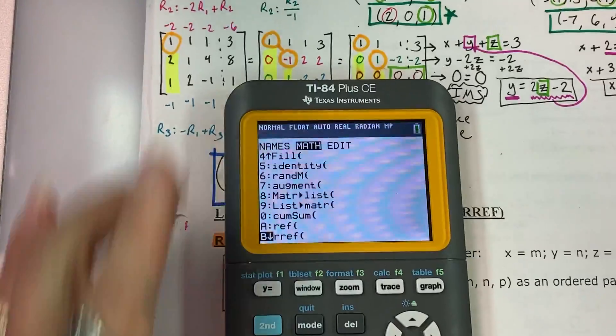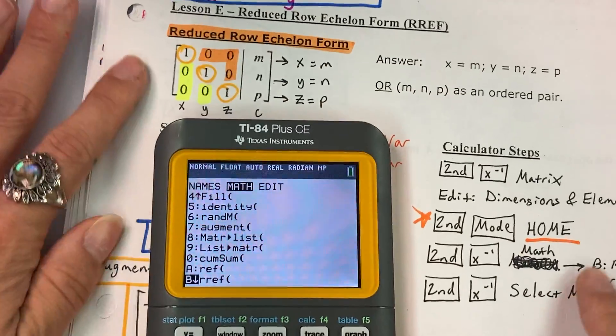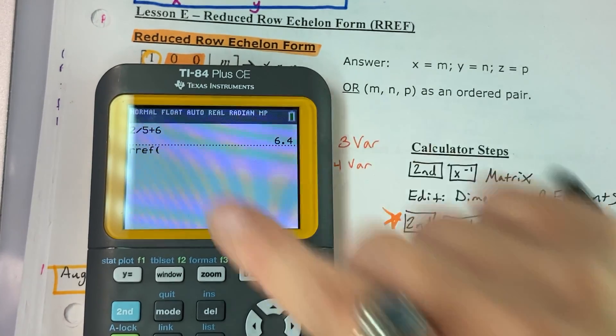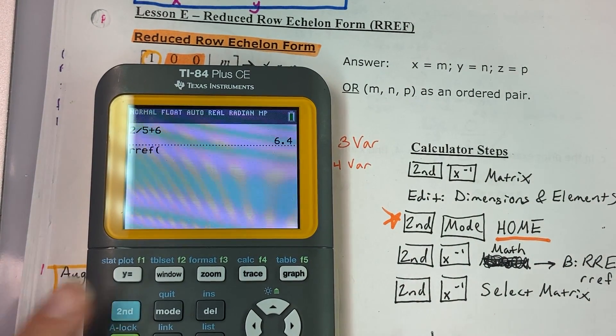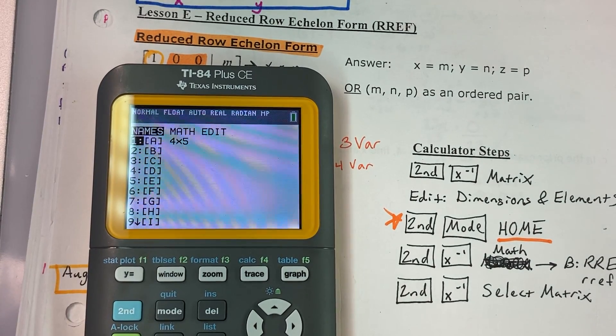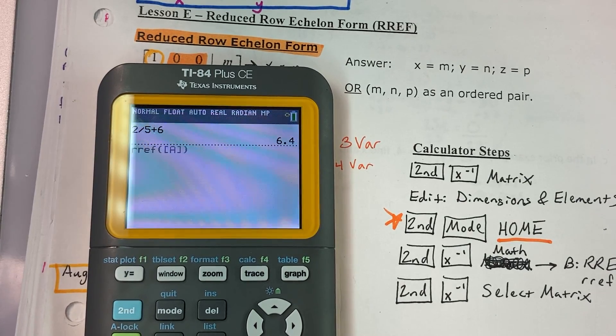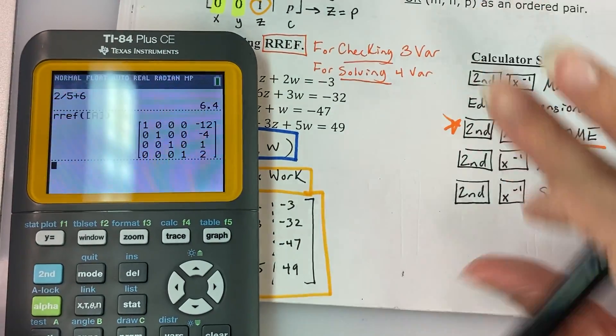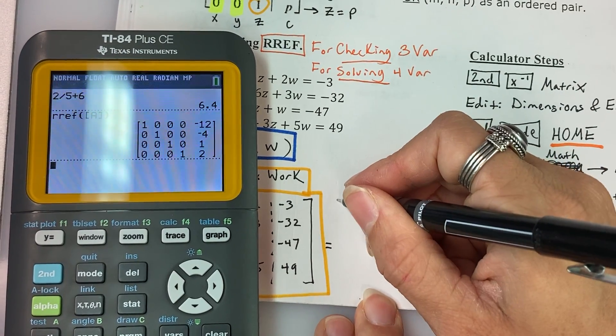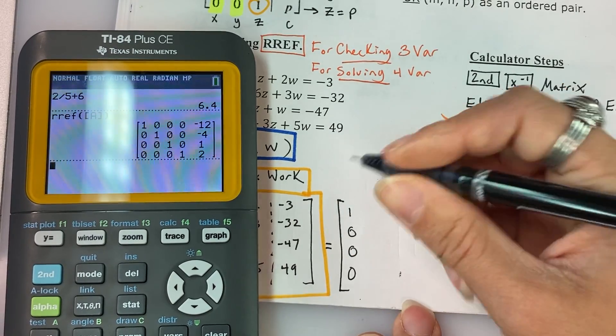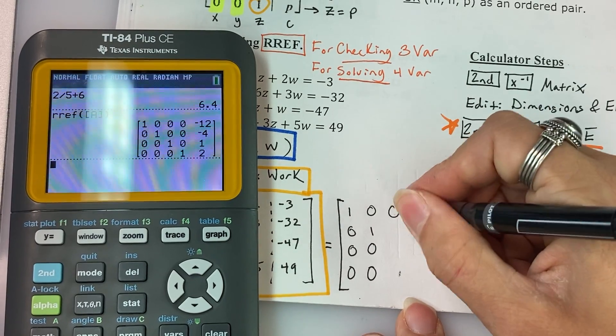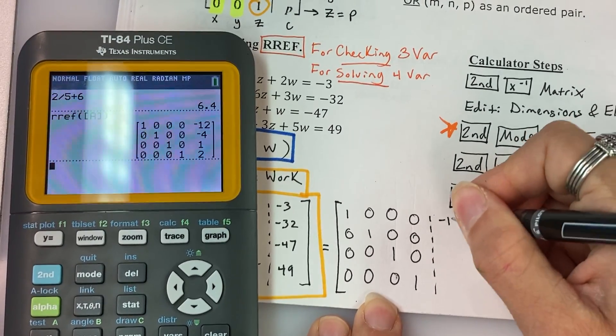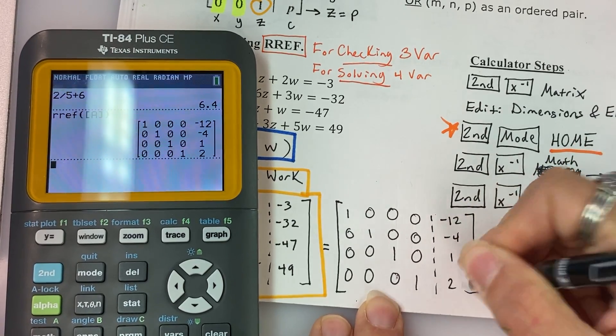All right folks. So after we select reduced row echelon form and press enter, we are on our home screen, but now we need to select the matrix. So we go second X to the negative one, select matrix A, enter, close off our parentheses, and press enter. And this shows me the reduced row echelon form, which I am going to copy down on my paper next to my augmented matrix. So our reduced row echelon form: one with zeros below it, zero one with zeros below it, zero, zero, one, zero, zero, zero, one. And then negative 12, negative four, one, and two.